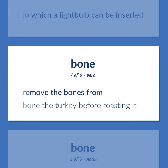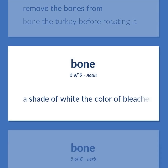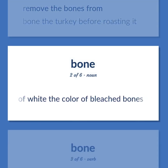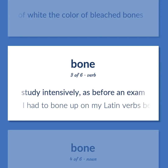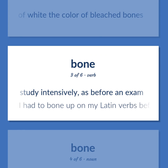Remove the bones from. "Bone the turkey before roasting it." A shade of white — the color of bleached bones. Study intensively, as before an exam. "I had to bone up on my Latin verbs before the final exam."